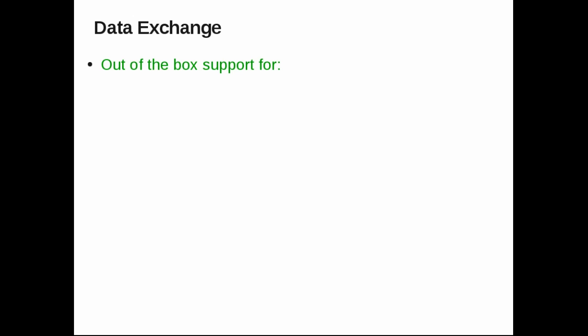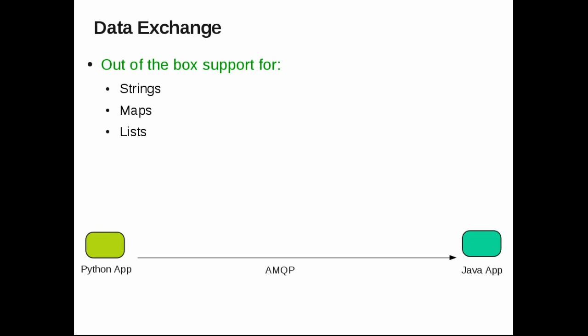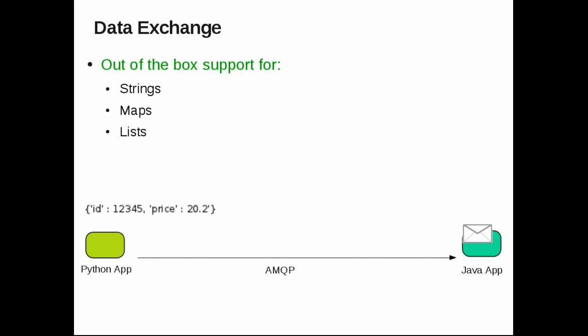Proton has good support for data exchange. We provide out-of-the-box support for common data structures like strings, maps, and lists. For example, let's assume we have a Python application and a Java application communicating over MQP using Proton. On the Python side, you have a dictionary and you want to send the data across. Proton allows you to set the dictionary directly as message content and send it across the wire. When the Java application receives the message, the content is exposed as a Java util map. If it was a Ruby application, the content would be exposed as a Ruby map.